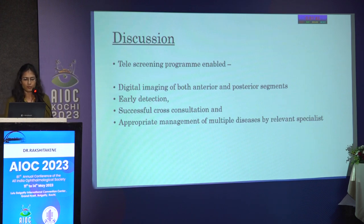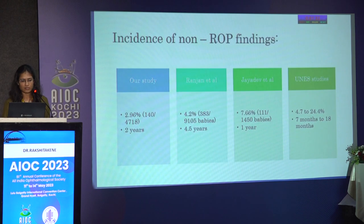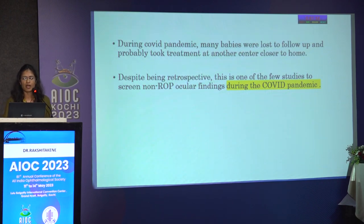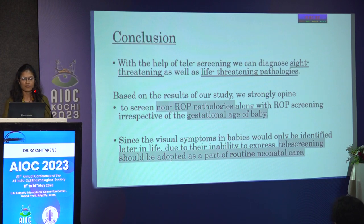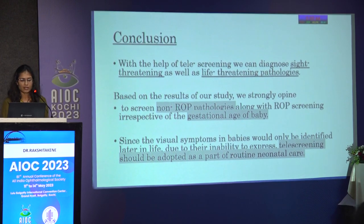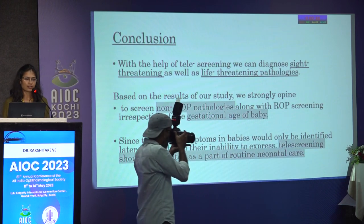Telescreening has enabled digital imaging of both anterior and posterior segments, early detection of pathology, and appropriate management of multiple diseases. In our study, the incidence of non-ROP findings was 2.96% over two years, compared to 4.2% in Ranjan et al. over 4.5 years and 7.6% in Jayadev et al. over one year. During the COVID pandemic, many babies were lost to follow-up. Despite being retrospective, this is one of the few studies to screen non-ROP ocular findings during the COVID pandemic. The conclusion is that with telescreening, we can diagnose sight-threatening and life-threatening pathologies, and non-ROP pathologies should be screened along with ROP screening irrespective of gestational age.